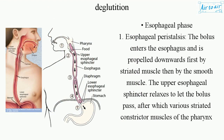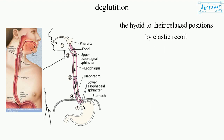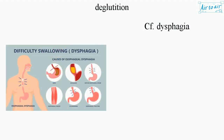Esophageal phase: 1. Esophageal peristalsis — the bolus enters the esophagus and is propelled downwards, first by striated muscle then by smooth muscle; the upper esophageal sphincter relaxes to let the bolus pass, after which striated constrictor muscles of the pharynx, peristalsis, and relaxation of the lower esophageal sphincter sequentially push the bolus through the esophagus into the stomach. 2. Relaxation phase — the larynx and pharynx move down with the hyoid, mostly by elastic recoil, to their relaxed positions. See also: dysphagia.